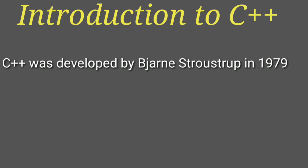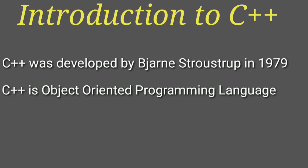C++ was developed by Bjarne Stroustrup in the year 1979 at AT&T Bell Lab. C++ is an object-oriented programming language, but it is not a pure object-oriented programming language, because a C++ program can be developed using the procedural-oriented method as well as the object-oriented method. So it is not a pure object-oriented programming language.